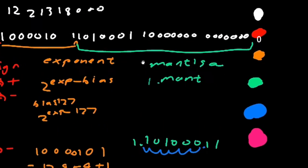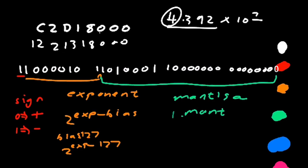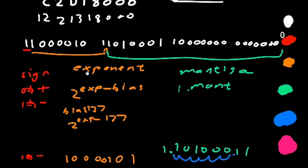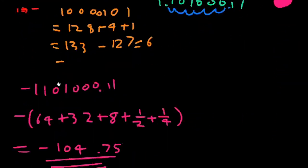So in our lesson, we learned how to convert from hexadecimal to binary IEEE 754 single-precision float and to convert that into decimal.